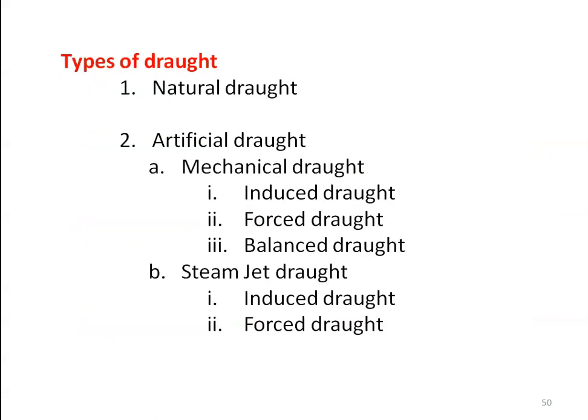There are two types of draught: natural draught and artificial draught. Natural draught is created by the temperature difference of the hot gases and the atmospheric air. Artificial draught is created by a mechanical system. Artificial draught is further classified into mechanical draught and steam jet draught. Mechanical draught is further classified into three types: induced draught, forced draught, and balanced draught. Steam jet draught is also classified into induced draught and forced draught.